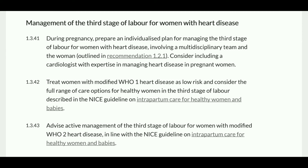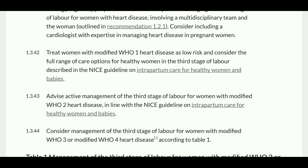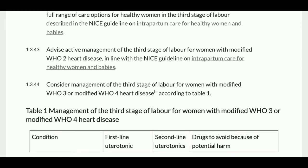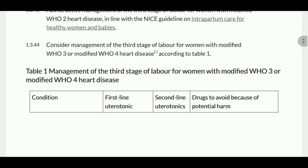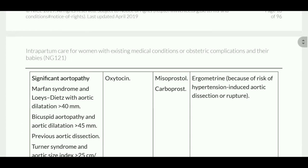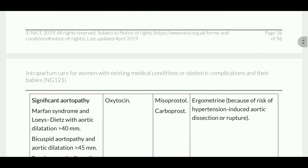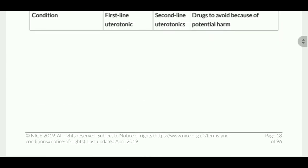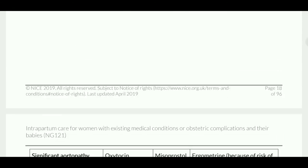Regarding management of the third stage of labor in women with heart disease: during pregnancy, prepare an individualized plan for managing the third stage of labor involving the multidisciplinary team. Treat the woman with modified WHO 1 heart disease as low risk and consider the full range of care options in the third stage of labor. Advise active management of the third stage for women with modified WHO 1, in line with the NICE guideline. For management of the third stage with modified WHO 3 and 4, follow the recommendations in the relevant table, covering conditions, first-line uterotonic agents, second-line agents, and drugs to avoid.